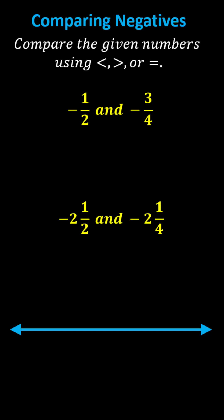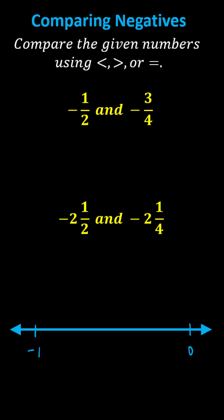Both values are between zero and negative one. Because zero is greater than negative one, let's label the right side zero and the left side negative one. Now because we have negative one-half and negative three-fourths, let's break the interval from zero to negative one into four equal parts, so we can count by one-fourths.